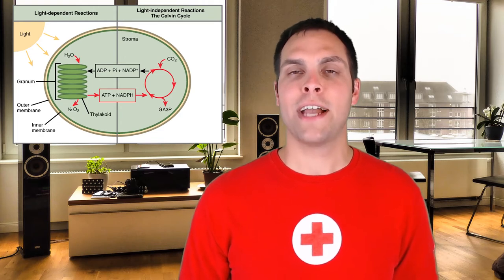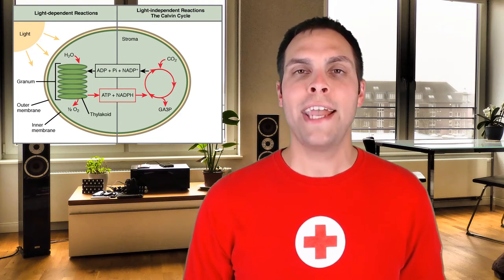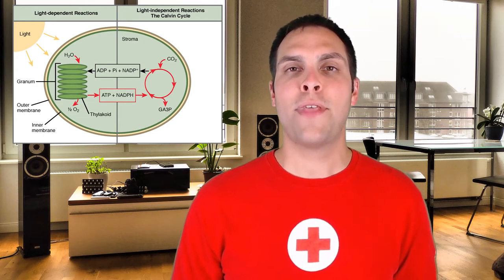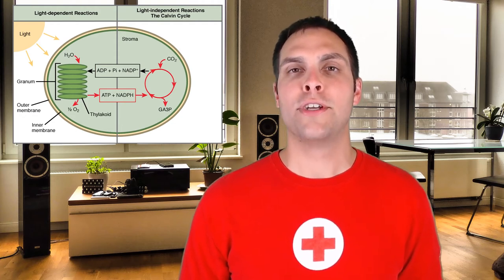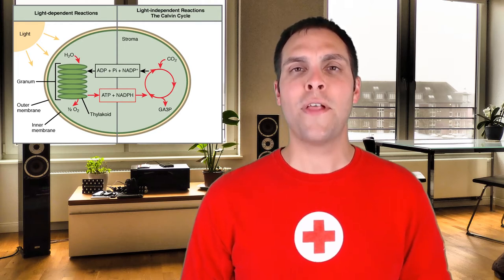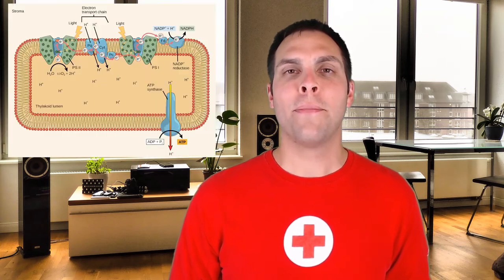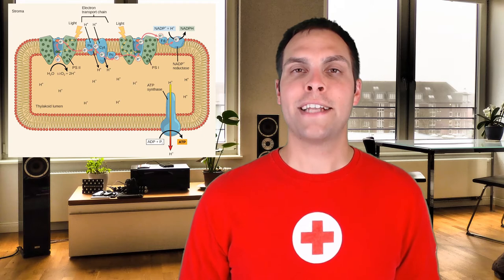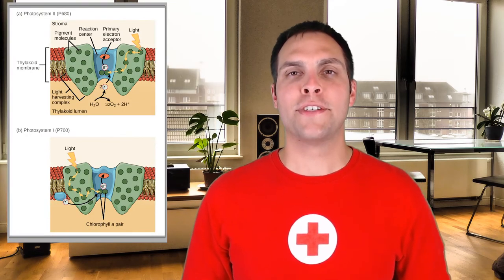We prefer the term Calvin cycle over 'light-independent reactions' because many enzymes involved actually need light to activate them. During the light reactions, we take energy from sunlight and use it to create molecules such as ATP and NADPH, which are then utilized during the Calvin cycle to fix carbon dioxide and turn it into carbohydrate energy. The light reactions involve two photosystems connected by an electron transport chain, ultimately producing the NADPH and ATP needed for the Calvin cycle.